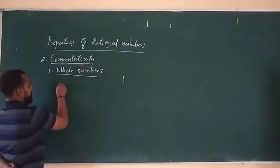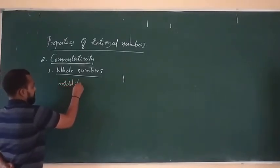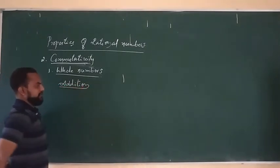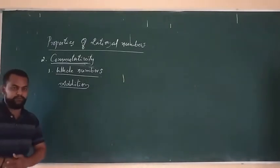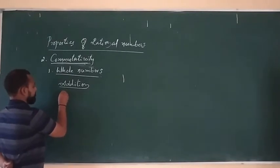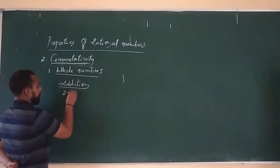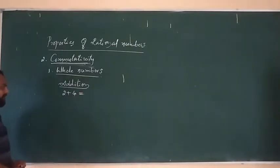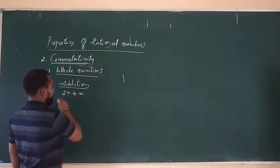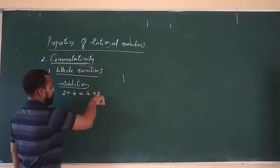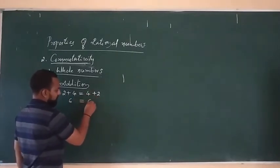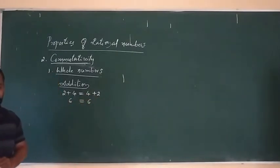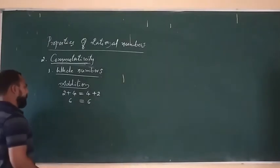The first operation is addition. The sum of two whole numbers: here 2 plus 4 equals 4. Then reversing: 4 plus 2. Here 2 plus 4 is 6, and 4 plus 2 is 6. So 6 equals 6 — LHS is equal to RHS.